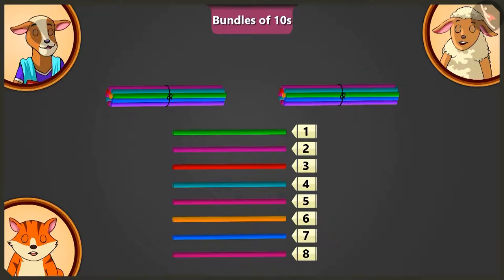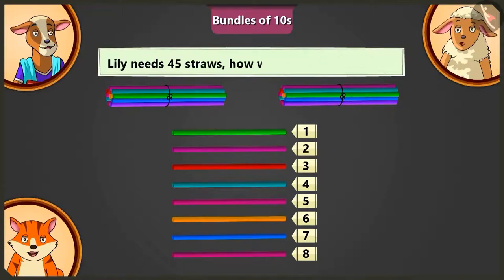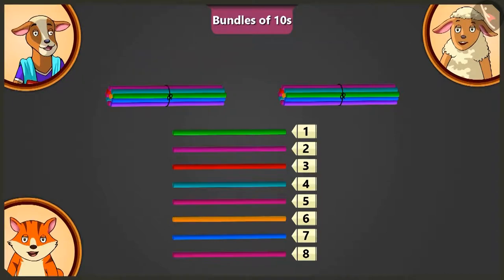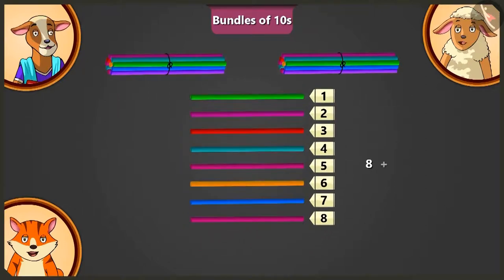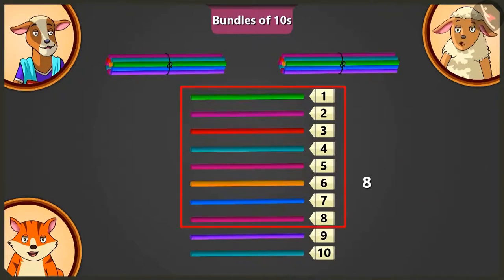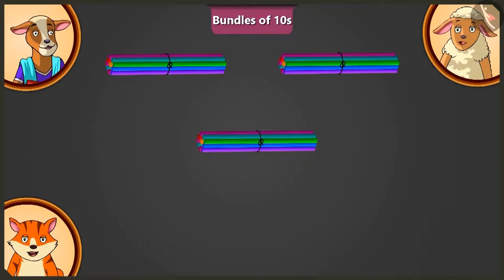Lily is excited because those are all the straws she needs. But Corey points out that Billy needs forty-five straws. Lily is asked how many straws need to be added to eight straws to make a third bundle of ten. Lily figures out: eight and one is nine, nine and one is ten, so adding two straws to eight straws makes ten, allowing a third bundle of ten.